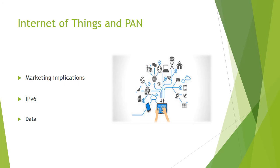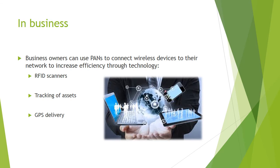We decided to cover the topic of the Internet of Things and personal area networks, including marketing implications, IPv6, and data. In business, owners can use personal area networks to connect many devices wirelessly — with applications including RFID scanners, tracking of assets, and GPS delivery.